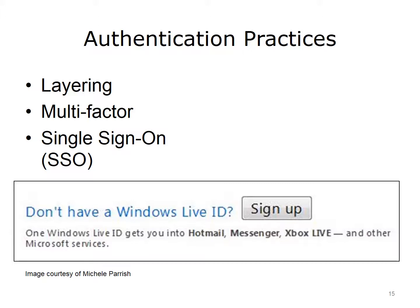Layering is a best practice for authentication. This requires users to have multiple authentications of different types to gain access. For example, to access a secure area, they may need a key to unlock a door and enter a man trap, then know the code for a cipher lock and provide a fingerprint scan — requiring something they have, something they know, and something they are. There are also systems that only require a user to log in once and then they are able to access other resources; their authentication credentials are passed between systems. Microsoft Windows Live ID is an example of single sign-on, where you sign in once and can access your email, Messenger, Xbox Live, and other Microsoft services.